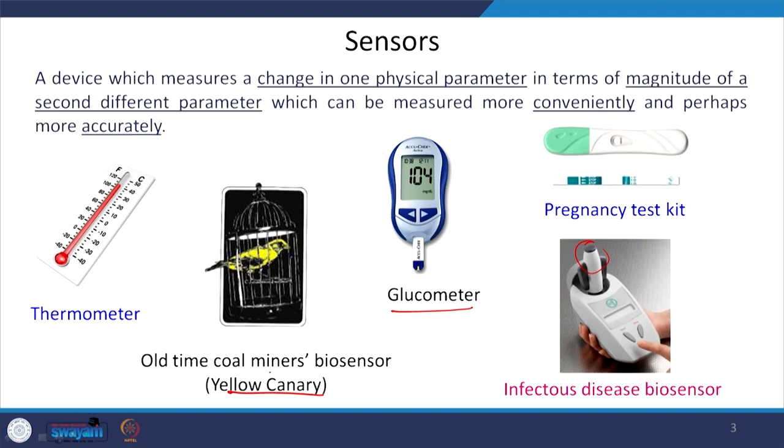Out of these sensors, we can categorize them into two groups. One group is quantitative while the other is purely qualitative. For example, the coal miners biosensor — the yellow canary bird — or the pregnancy kit tells you whether a situation is present or not. The coal miners biosensor tells you there is an unpleasant situation but does not tell you how unpleasant, or how much gas leakage there is. The pregnancy kit tells you whether the lady is pregnant or not; it does not give information about how much. So it is a qualitative sensor.